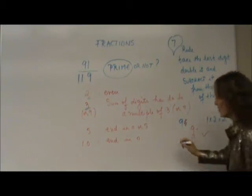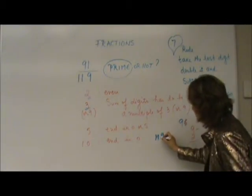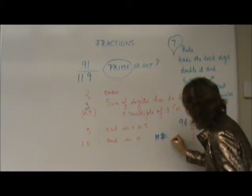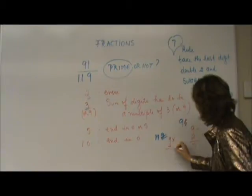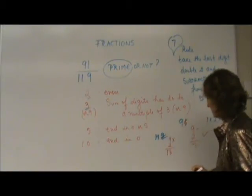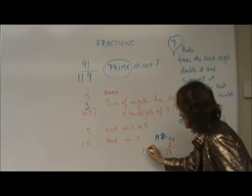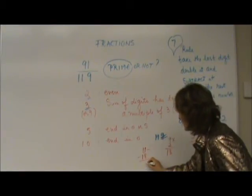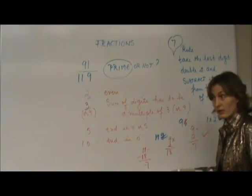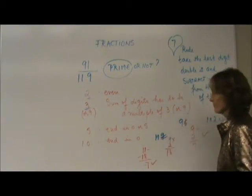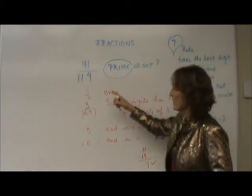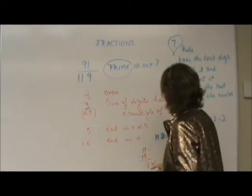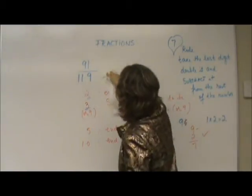Next number is 119. This is my last digit, 9. 9 times 2 is 18. 11 minus 18 will be negative 7. Can this be divided by 7? Yes. So, both of my numbers, 91 and 119, can be divided by 7. It's... Sorry. And let's try to divide them.